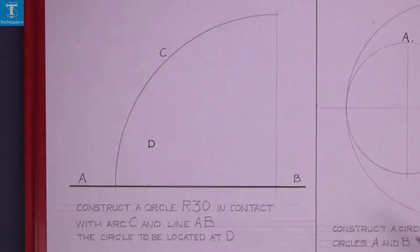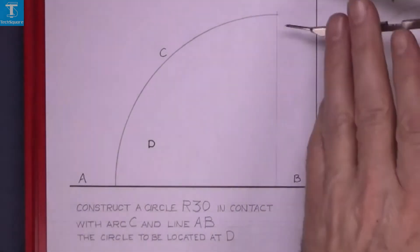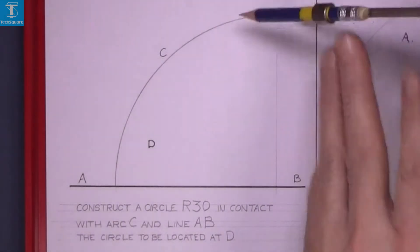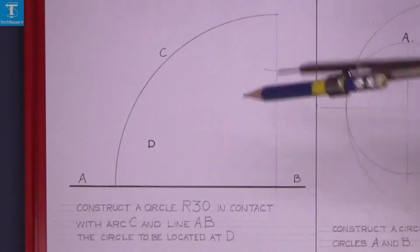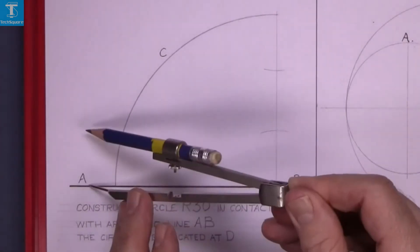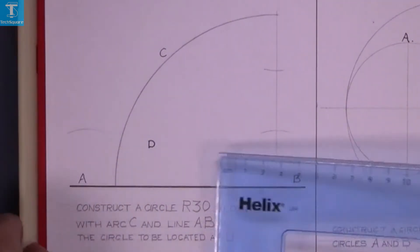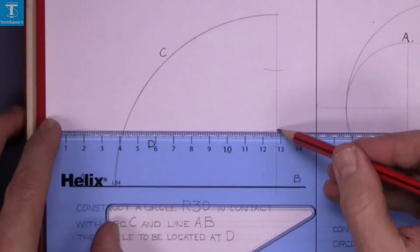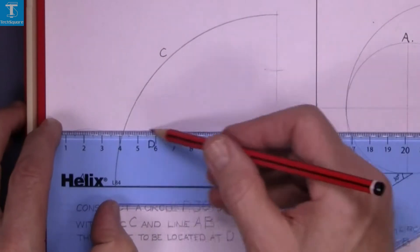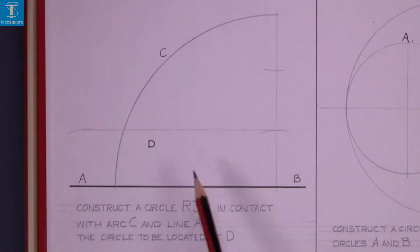First, set the compass to 30 and mark down 30 from the top and up 30 from the bottom. Then draw a line across — the center will be on that line somewhere.